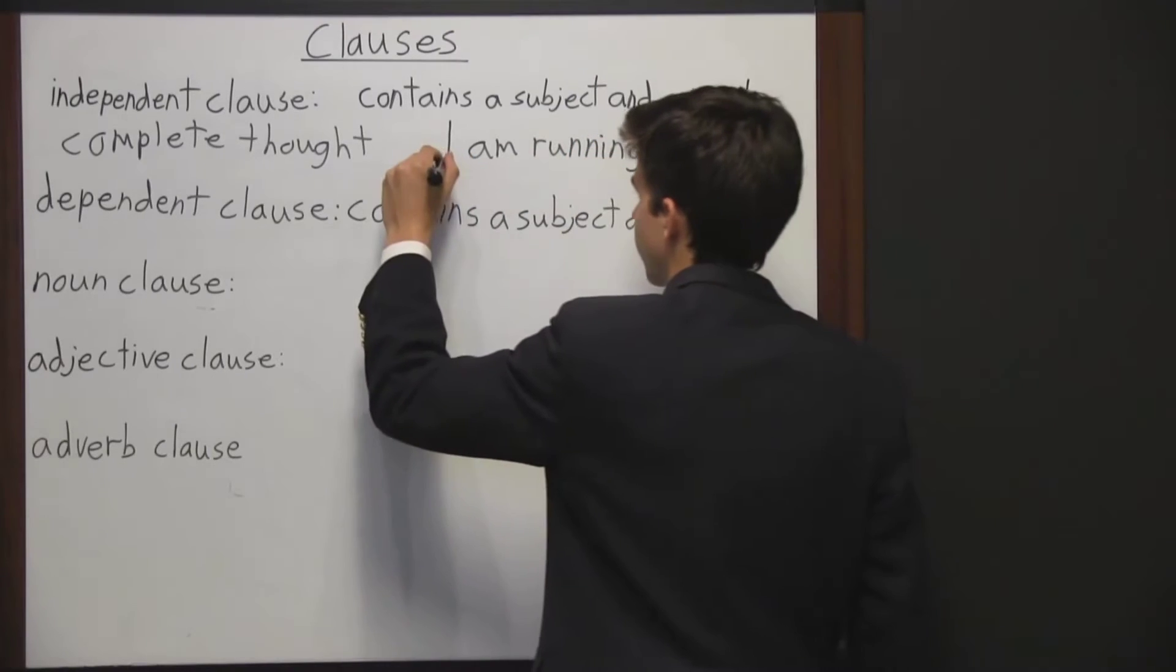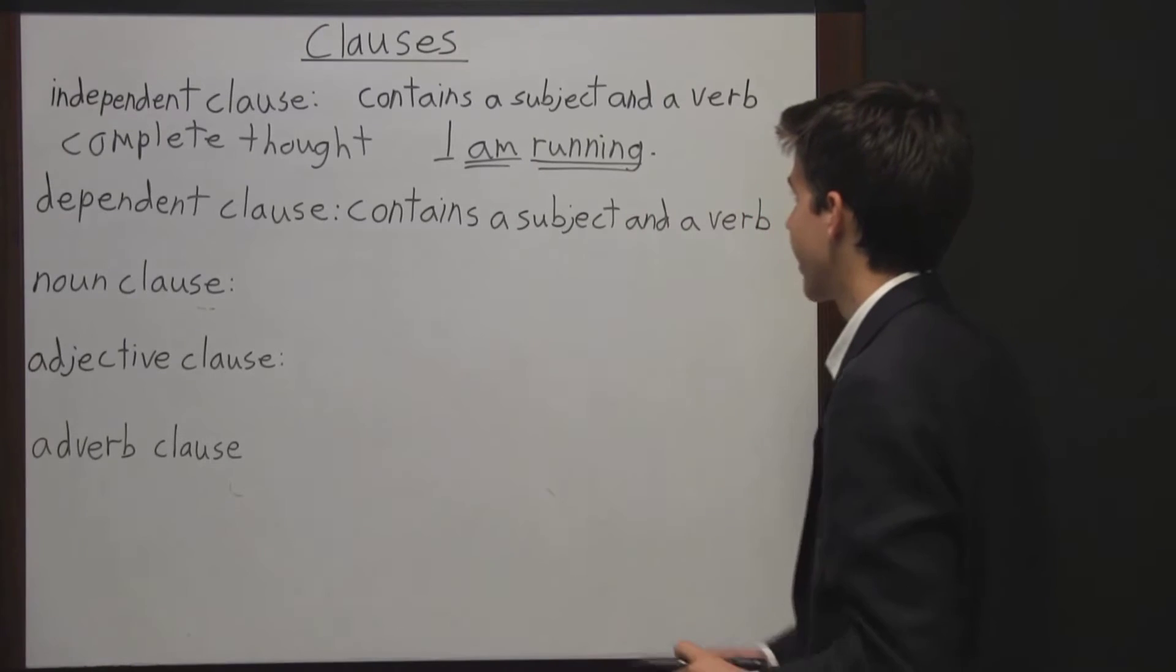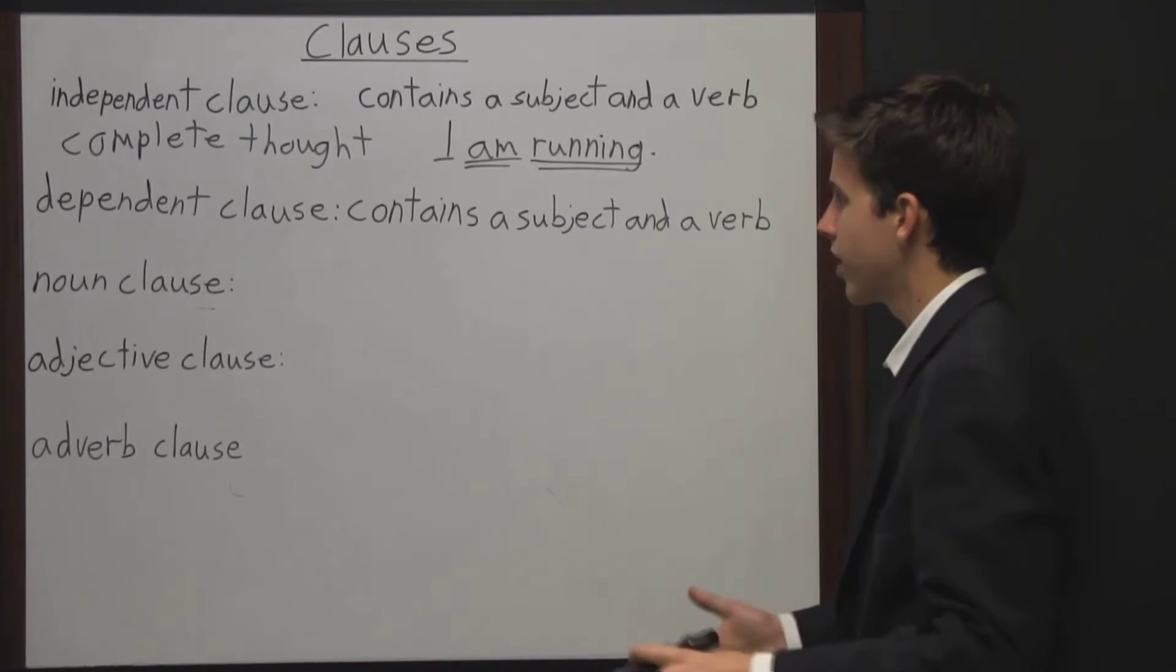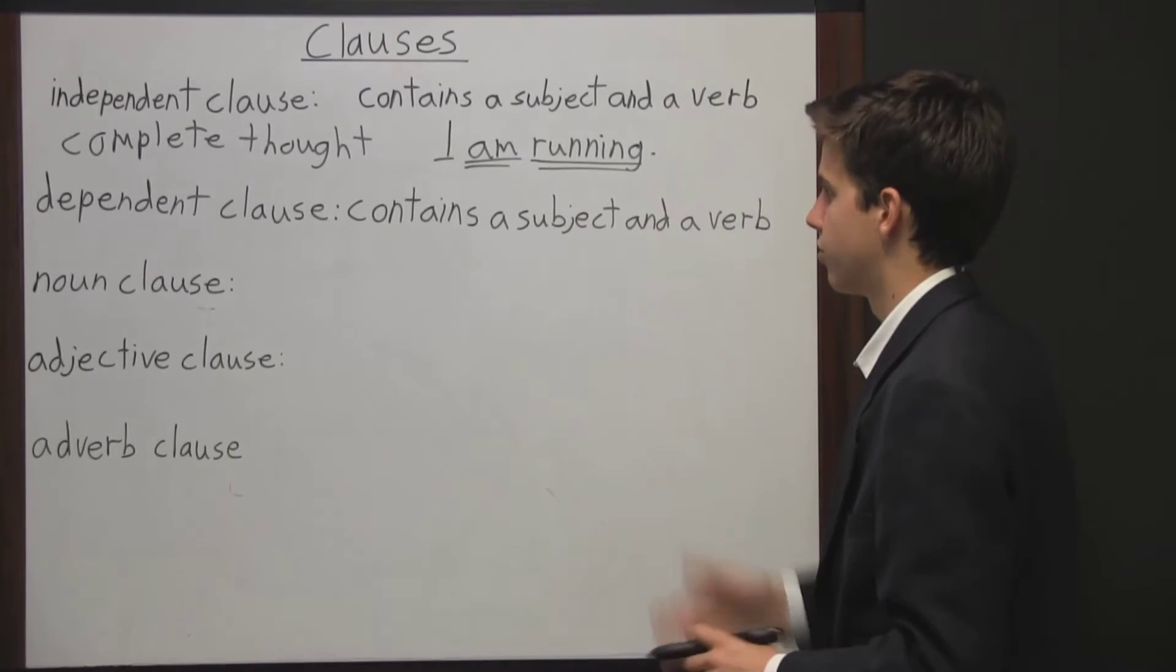So here we have a subject, I, and then we have this verb phrase, am, and running. So it's a complete thought, it can stand alone and be a sentence. Now sometimes independent clauses have other clauses grouped with them, but they can also stand alone.